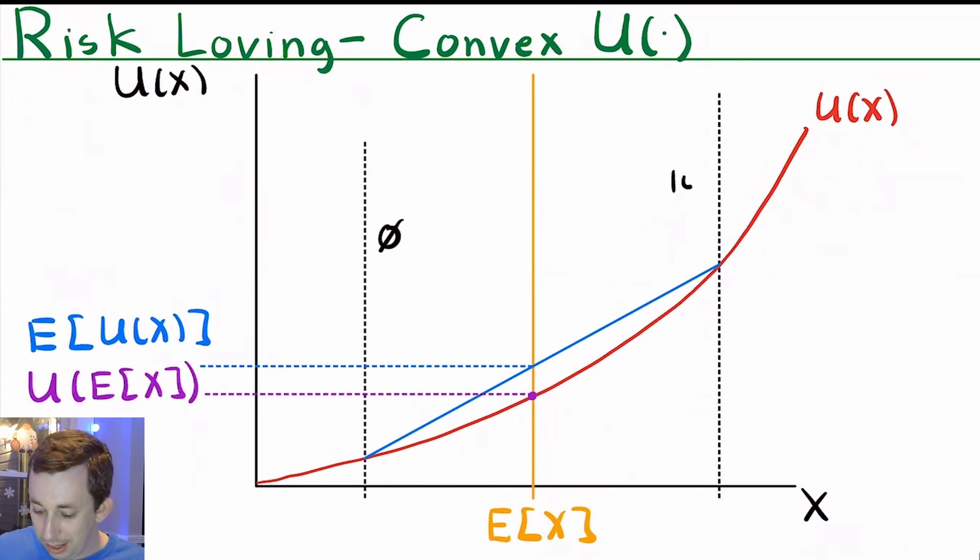So again, if this is zero, if this is 10, so that the expected value is five, we see that the utility of $5 is down here, but the expected utility of getting $0 with 50% or $10 with 50% is all the way up here. So this person would not want to take the $5 for sure, they would take the coin and they would absolutely flip it, they would play the gamble. So hopefully this gives you a better understanding of Jensen's inequality and how it relates to risk aversion.